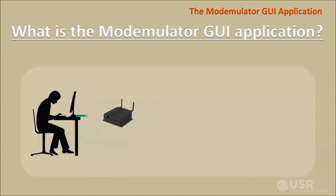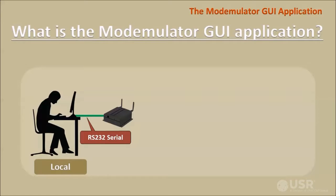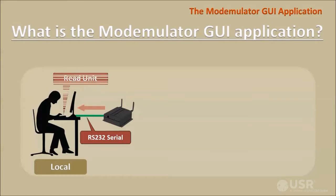The modemulator is a serial interface device and the GUI communicates with the modemulator over that serial interface. A read unit operation reads the modemulator's current settings, banners, passwords, and dialing directory into the GUI for viewing and editing. A write unit operation sends the settings, banners, passwords, and phone directory from the GUI into the modemulator.